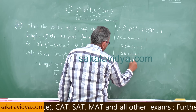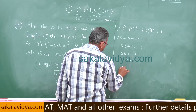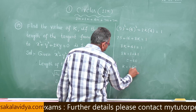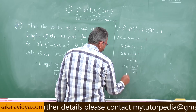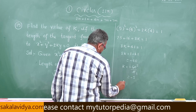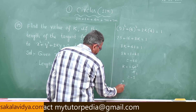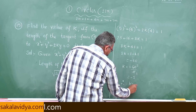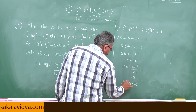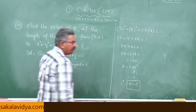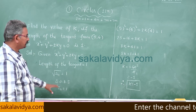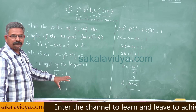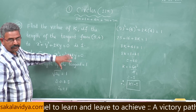Now, 41 + 8K = 1, so 8K = 1 - 41 = -40, giving K = -40/8 = -5. Therefore K = -5.